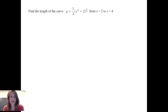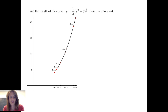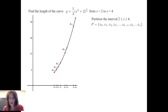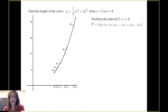Let's apply this idea and find the length of the curve y = (⅓x² + 2)^(3/2) on the interval from 2 to 4. First, we're going to sketch the curve on the interval, noting that x_0 = 2 and x_n = 4. We want to partition this interval from 2 to 4, getting x_0, x_1, x_2, x_3, …, x_{k−1}, x_k, and on to x_n, where x_0 = 2 and x_n = 4.